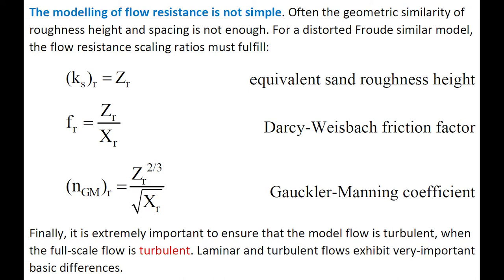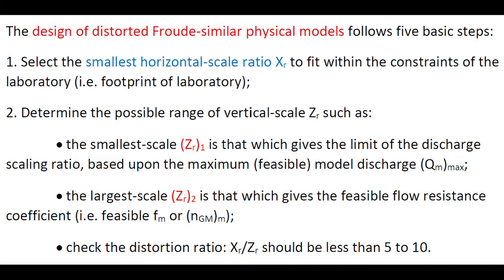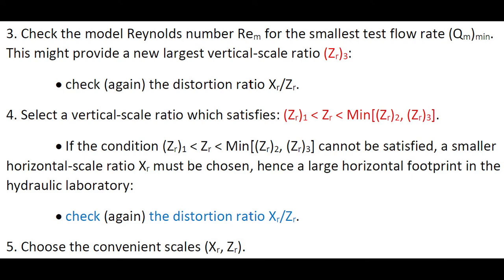Importantly, the full-scale flow is nearly always turbulent and the model should also be turbulent. The design of a distorted Froude similarity physical model follows five basic steps: starting with the selection of the smallest horizontal scale ratio to fit the footprint of the laboratory, then determining the possible range of vertical scaling ratio ZR with constraints linked to the maximum discharge available in the laboratory, feasible flow resistance, and the model Reynolds number must be greater than 5,000 to 10,000 for the smallest discharge to be investigated. Finally, the distortion ratio must be checked. If this constraint cannot be fulfilled, a smaller horizontal scaling ratio must be selected, hence a larger horizontal footprint in the hydraulics laboratory.